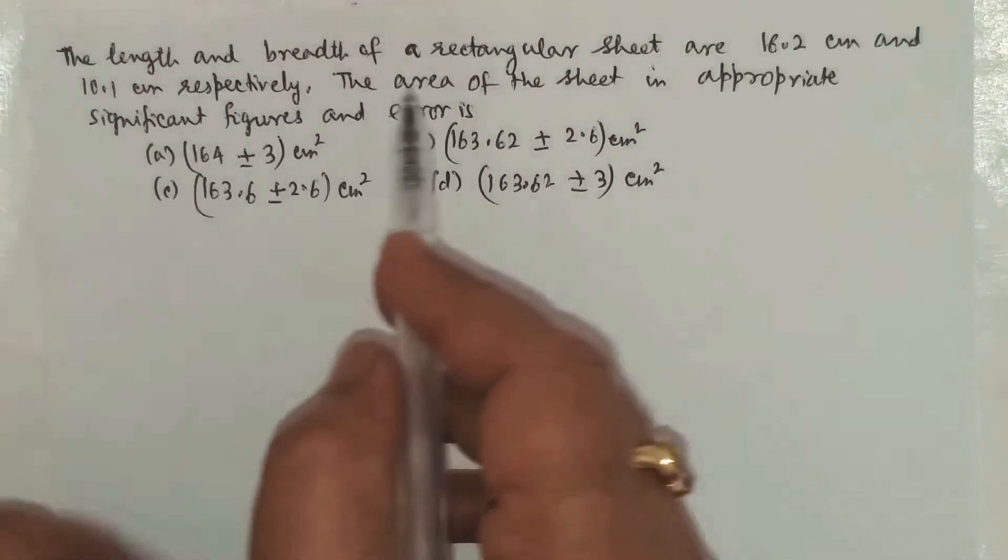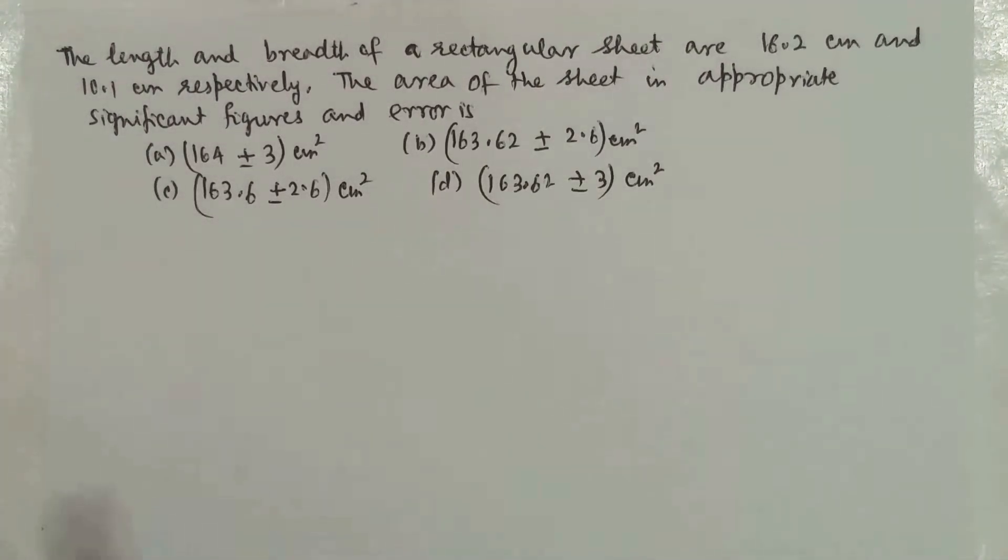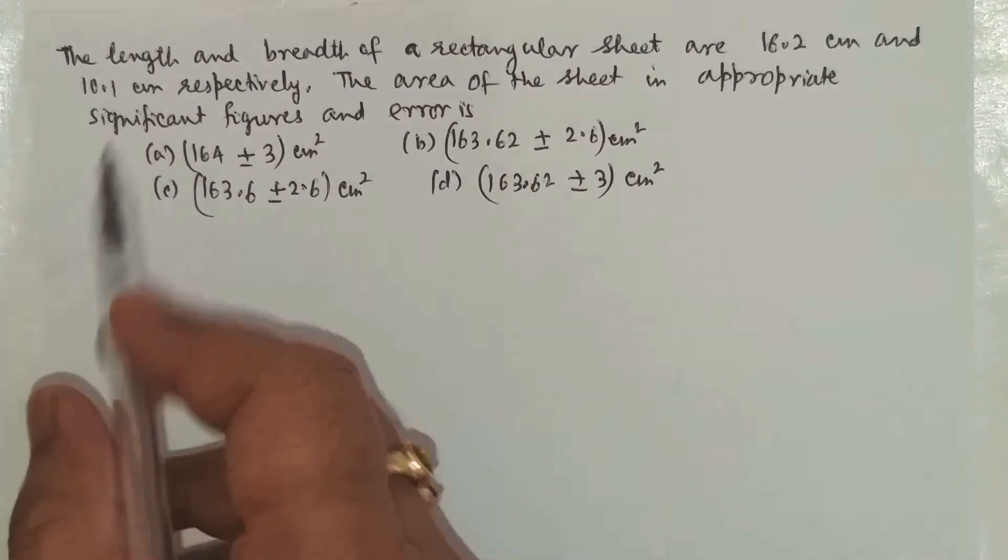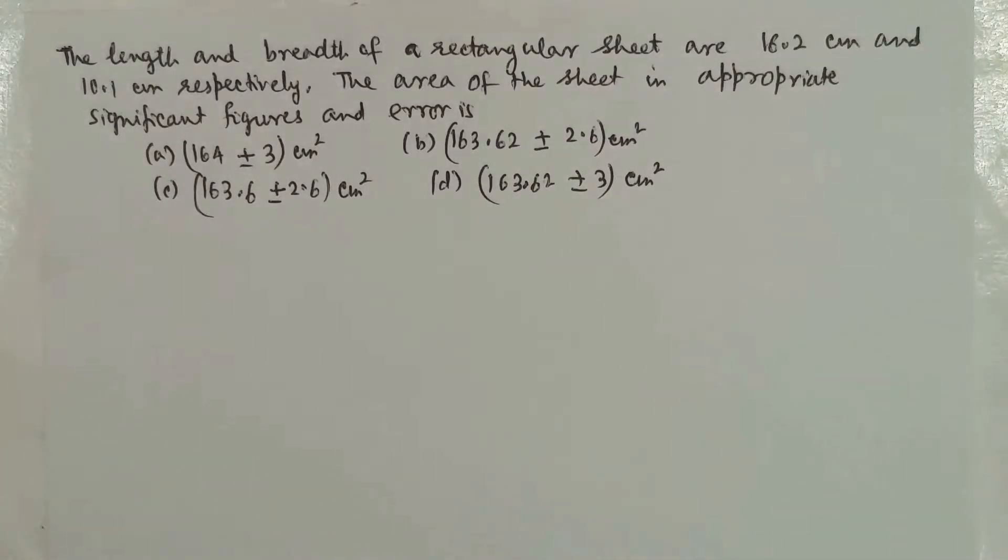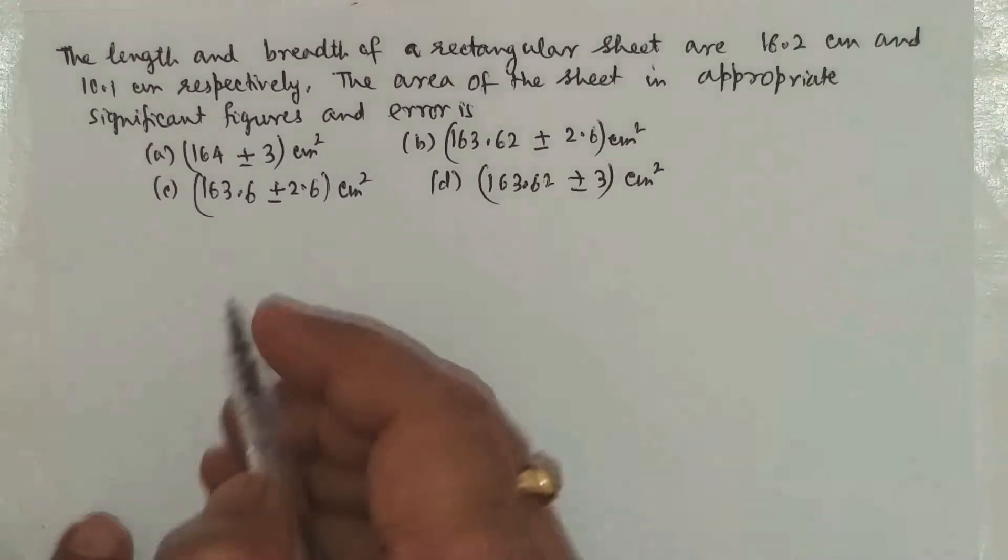This question states that the length and breadth of a rectangular sheet are given as 16.2 cm and 10.1 cm respectively. We have to find the area in appropriate significant figures and the error.